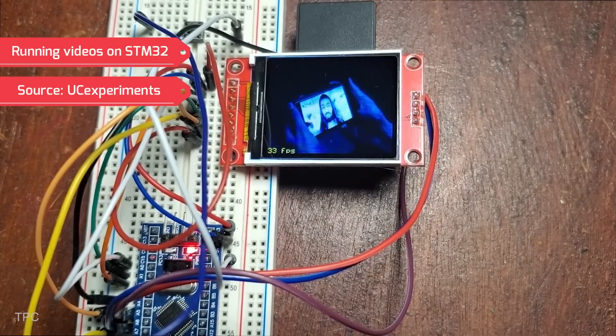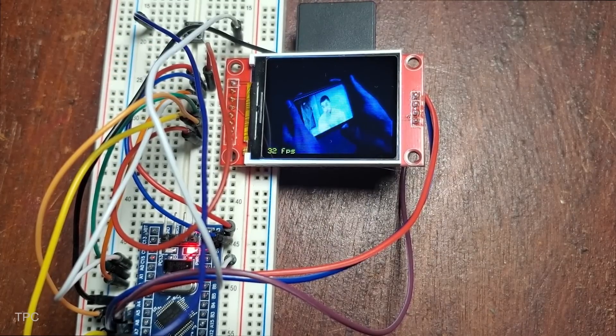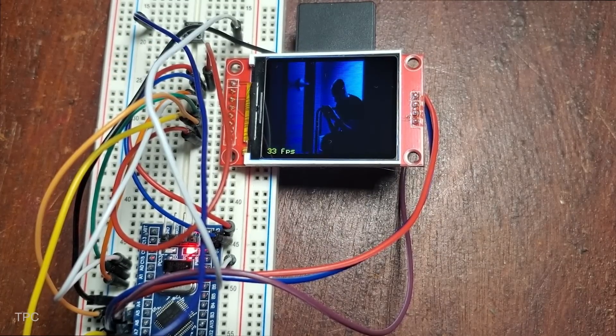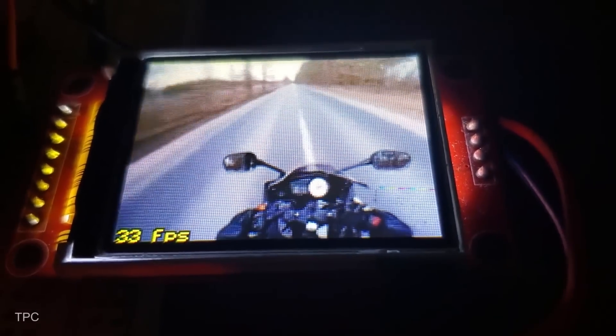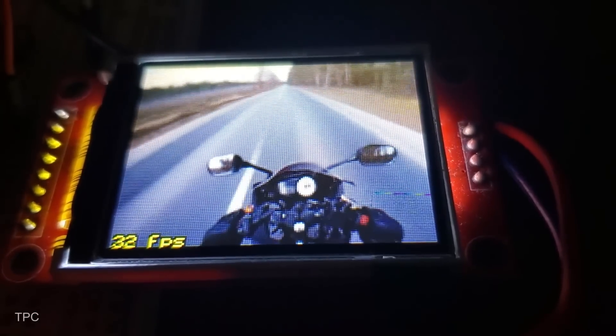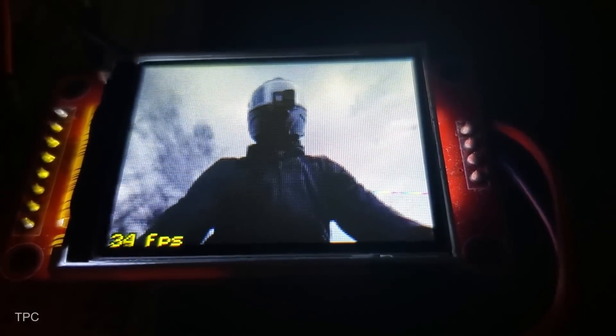Number 5. This project demonstrates how to display videos on a small TFT screen with an SD card slot, achieving an average frame rate of 33 frames per second. Despite the small screen size, the results are surprisingly smooth.